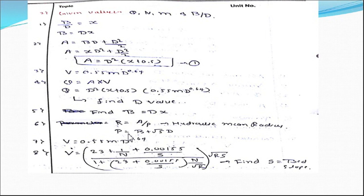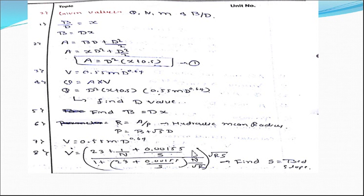Then calculate the hydraulic mean radius: R = A/P, knowing the perimeter P = b + √5 × d. Then calculate the critical velocity and apply Kutter's equation to find the bed slope S. By following these standard steps you can easily find the base width, depth, and bed slope of the canal. These are the standard formulas to solve any type of problem in the exam.